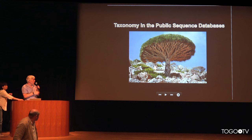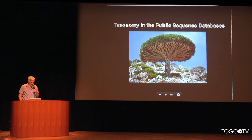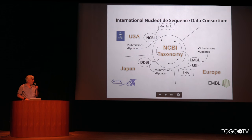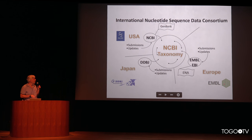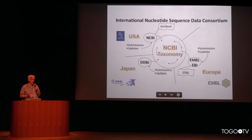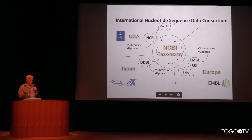I will talk about the taxonomy database at NCBI. That's the homepage of our database. Currently, the NCBI taxonomy database serves all three partners of the collaboration. We handle consults from DDBJ in Japan as well as Europe ENA, and we also handle taxonomy consults from our internal databases at NCBI in the USA. So every day curators get consults coming in from three different places geographically.